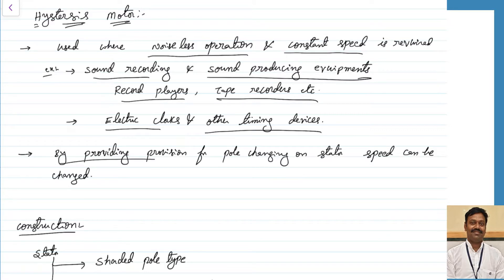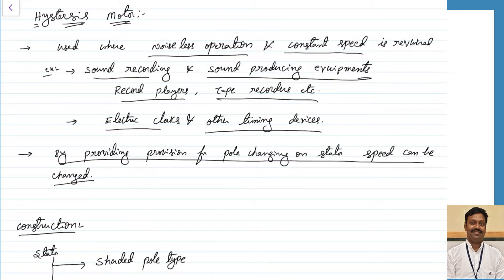By providing the provision for pole changing on the stator, the speed can be changed automatically, because in this case the rotor poles will automatically be induced like the induction motor depending on what the number of poles on the stator are. This is another benefit of this motor.